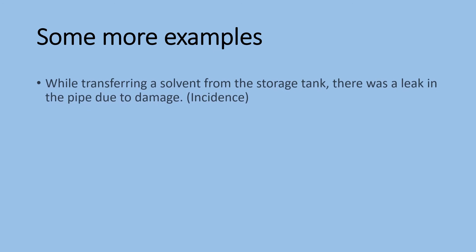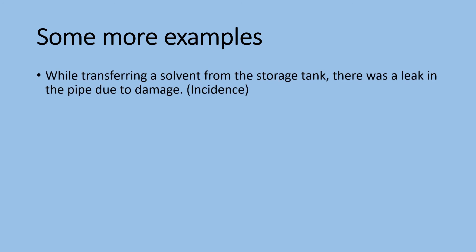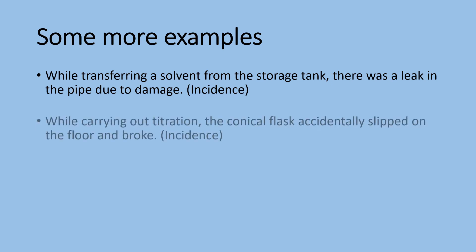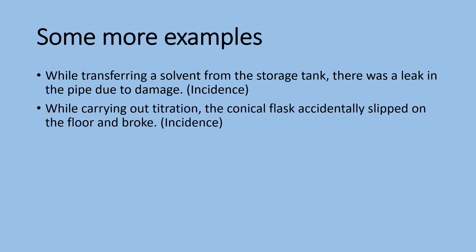Let us see some more examples. While transferring a solvent from the storage tank, there was a leak in the pipe due to damage. This is an accident — no impact on quality, only the solvent loss was found. While carrying out titration, the conical flask accidentally slipped on the floor and broke. This is also an accident. You have to do the titration again.